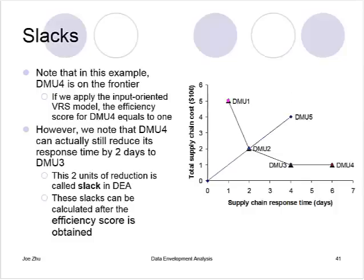So what is the slack? Let's look at this example. You have DMU 1, 2, 3, 4. These are DMUs on the frontier.